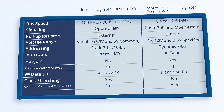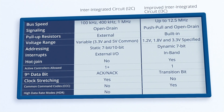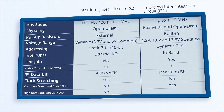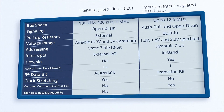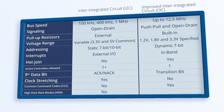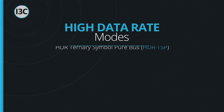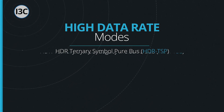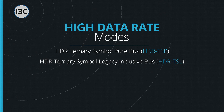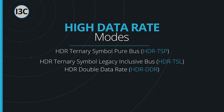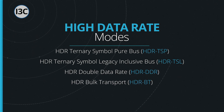Another feature built into i3C is called High Data Rate Mode, or HDR for short. HDR is entered by the host transmitting one of the four HDR CCCs. i3C has four HDR modes: HDR Ternary Symbol Pure Bus (HDR TSP), HDR Ternary Symbol Legacy Inclusive Bus (HDR TSL), HDR Double Data Rate (HDR DDR), and HDR Bulk Transport (HDR Bt).